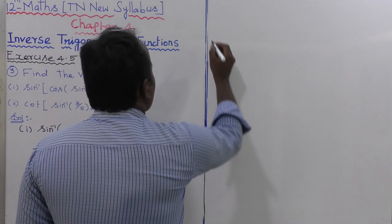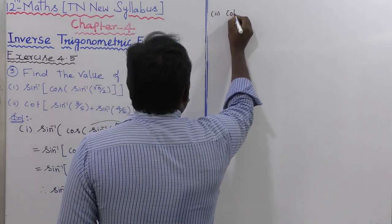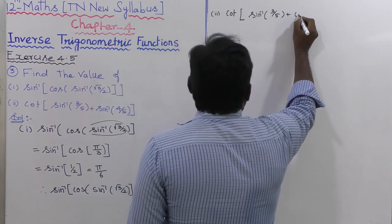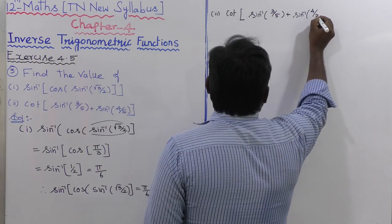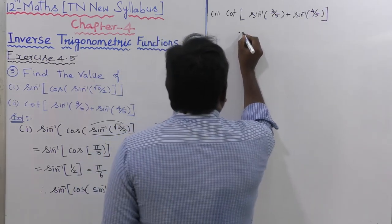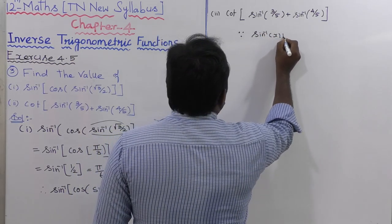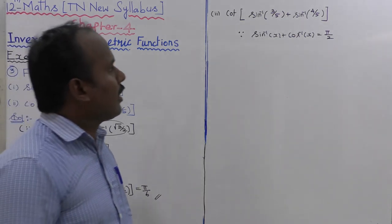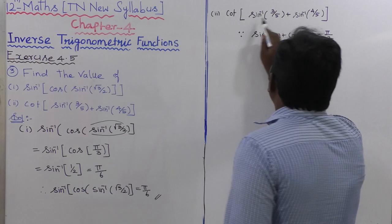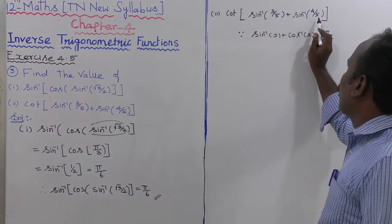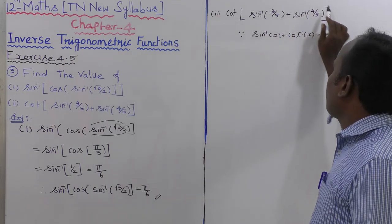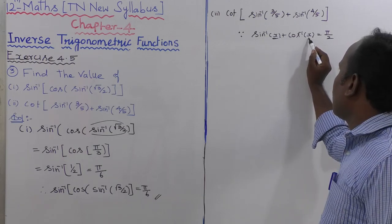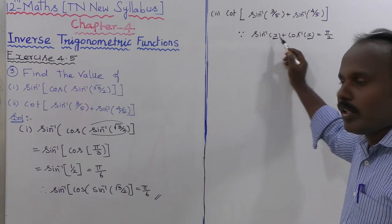Now the second subdivision: cot of sin inverse of 3 by 5 plus sin inverse of 4 by 5. We use the formula: sin inverse of x plus cos inverse of x is equal to pi by 2. We need to change one sin inverse term into a cos inverse term using this formula.